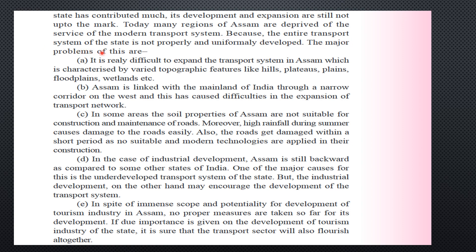It is really difficult to expand the transport system in Assam because of its topographic features. Assam is a land of hills and valleys — it has hills, plateaus like the Karbi Anglong plateau, plains, and wetlands. Because of this varied terrain, there is no uniform flat land where a coherent transport network can be laid out, creating many challenges in expanding the transportation system.